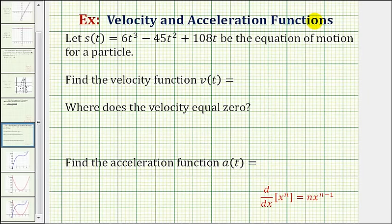Now we'll look at an example involving the velocity and acceleration functions given the position function. We're given that s of t is the equation of motion for a particle. We want to find the velocity function v of t, determine where the velocity equals zero, and also find the acceleration function a of t.